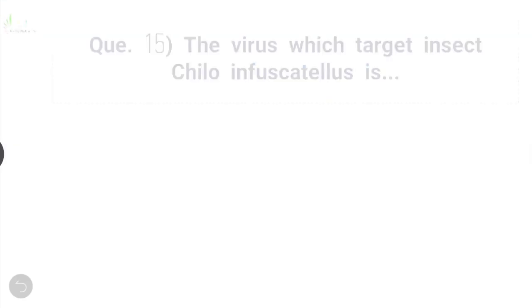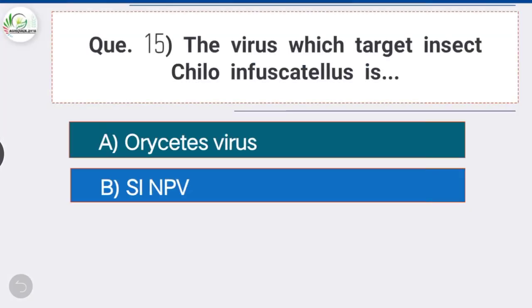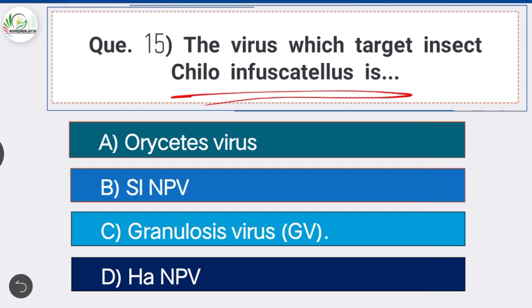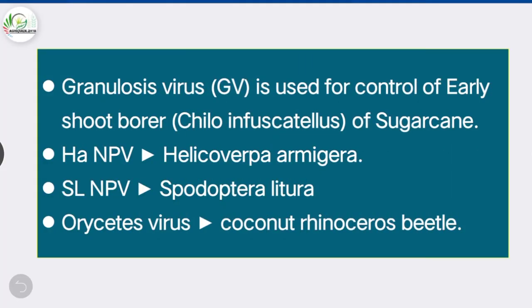Question 15: The virus which targets the insect Chilo infuscatellus is Option C, the correct answer: Granulosis Virus (GV). GV is used for control of the early shoot borer of sugarcane. Also note that HaNPV is used to control Helicoverpa armigera, SlNPV is used against Spodoptera litura, and Oryctes rhinoceros virus is used to control coconut rhinoceros beetle.